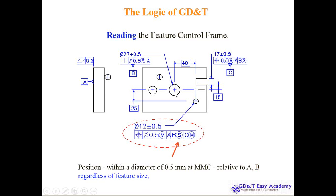Regardless of feature size means: whether you are talking about a diameter of 27, a diameter of 5, or a diameter of 12 — we don't care. Regardless of feature size means whenever you see S, it is not respective to any particular dimension; it applies to the overall package. So 0.5 regardless of feature size means only axis deviation — wobbling of the axis.